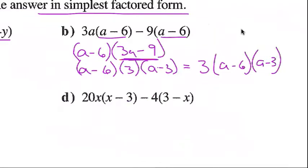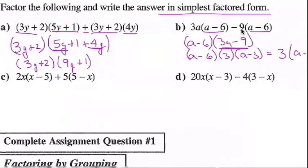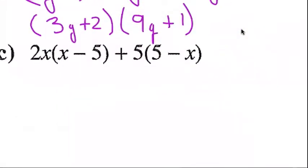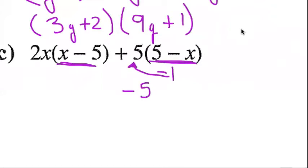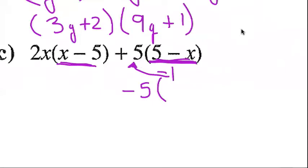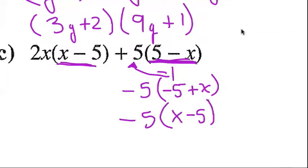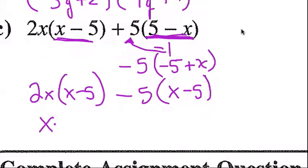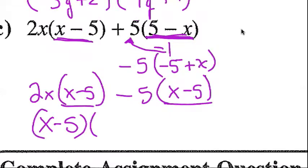Examples c and d: remember from the previous lesson we talked about factoring out a negative value to make the binomials look the same. Look how similar this is to that. For example c, if I divide by negative 1, (5 − x) becomes (x − 5). The intermediate step looks like this: dividing by −1 gives −5 + x, which I rewrite as (x − 5). So now I have 2x(x − 5) − 5(x − 5), and (x − 5) is my common factor, leaving me with 2x − 5.